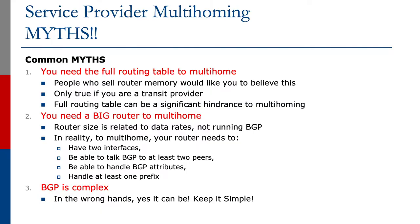There are myths out there. Let's look at three of the most common ones. The first is that you need the full routing table to multi-home. Folks who sell router memory would like you to believe this, but it's really only true if you're a transit provider. If you're providing transit, your end customers may wish to do traffic engineering. In fact, the full routing table could be a significant hindrance to multi-homing — we spend more time juggling the large number of prefixes in the V4 table and the increasing number in the V6 table than actually trying to make sure we can move packets.